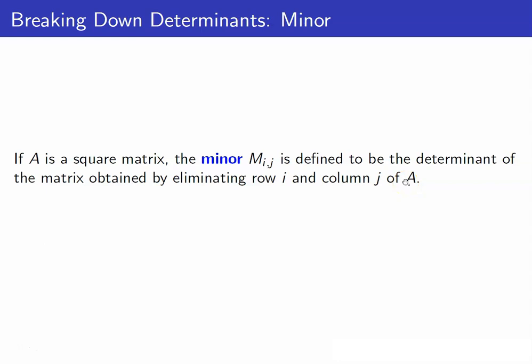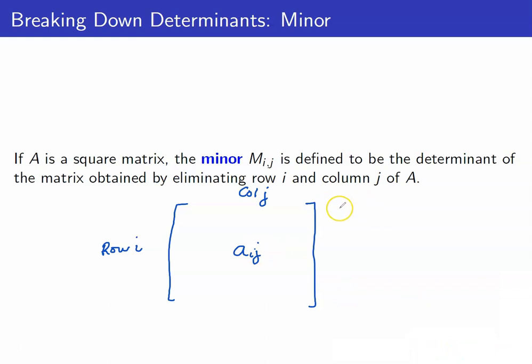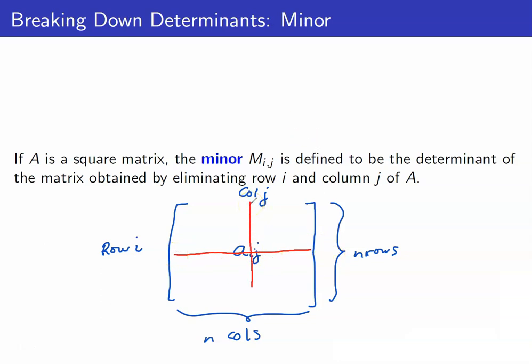Before we discuss determinants we have to define a few terms. First, let's discuss the minor. If A is a square matrix, the minor Mij is defined to be the determinant of the matrix obtained by eliminating row i and column j of A. What you need to do is remove row i and remove column j, and the resulting matrix will be of size (n-1) by (n-1).